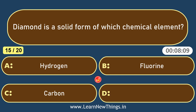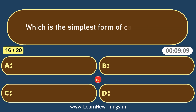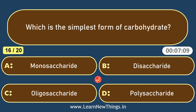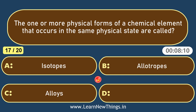Diamond is a solid form of which chemical element? Carbon. The one or more physical forms of a chemical element that occur in the same physical state are called allotropes.